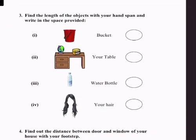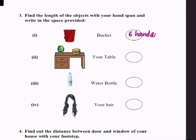Question number 3: find the length of the objects with your hand span and write in the space provided. Aapne hand span ki saahita se in objects ki length pata karni hai aur answer likhna hai. The length of the bucket is six hand spans.